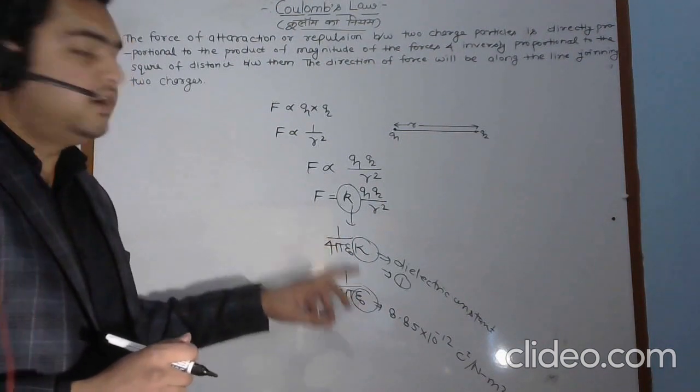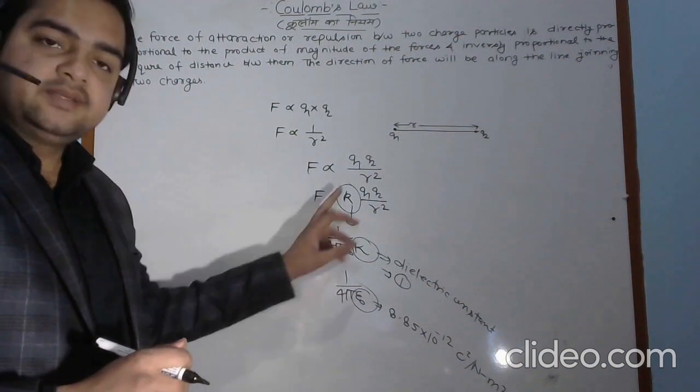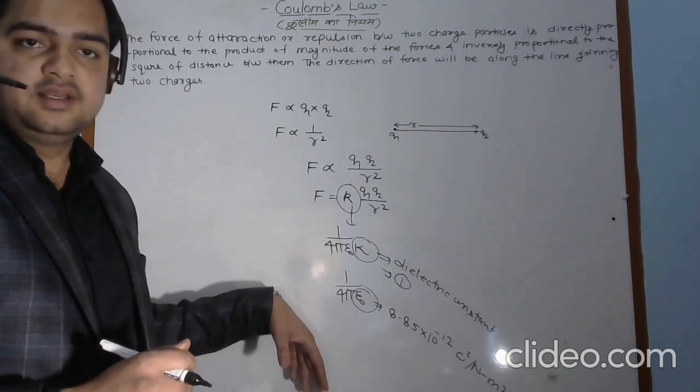Epsilon naught and F are inversely proportional. Higher the permittivity, lesser the force. Lesser the permittivity, higher the force.